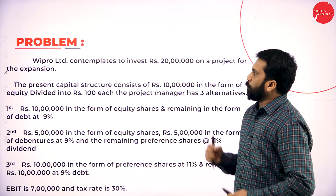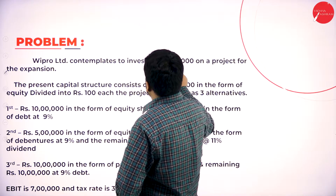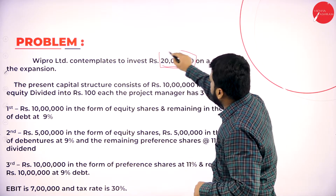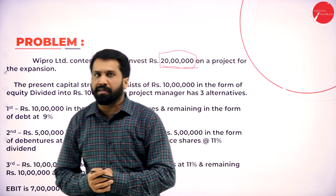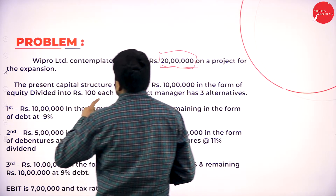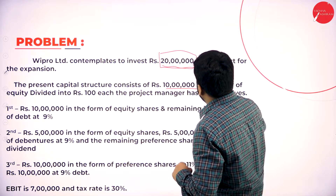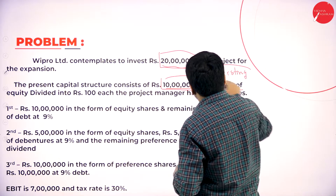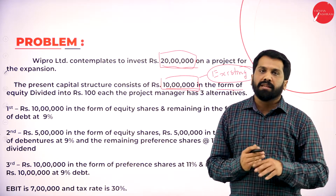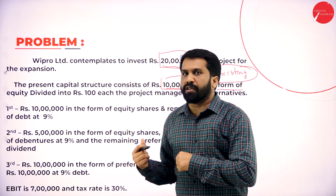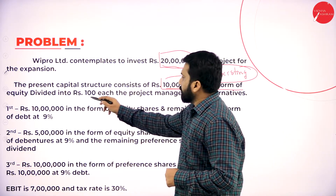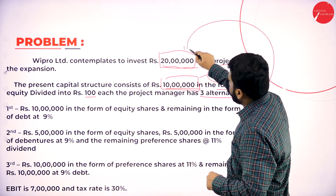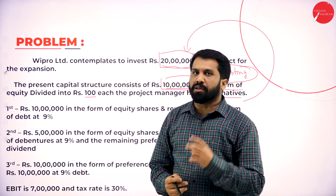The problem is about Wipro Limited. Wipro Limited contemplates to invest rupees 20 lakh on a project for expansion. So the complete problem is based on 20 lakh. The present capital structure consists of 10 lakh in the form of existing share capital — this is called the existing capital. We calculate the existing portion only to find out the total number of equities. The existing equities are divided into 100 rupees each. We have three alternatives to raise this 20 lakh.